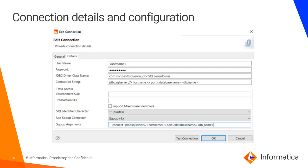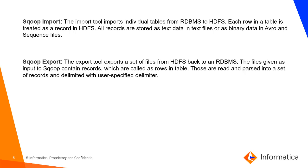If you specify the database name, by default whenever you list the tables by creating a physical data object, it will list all the tables from that particular database. The Sqoop import command is used to import individual tables from an RDBMS to HDFS, where each row in the table is treated as a record in HDFS. All records are stored as text data in a text file, or as binary data in Avro or SequenceFile format.